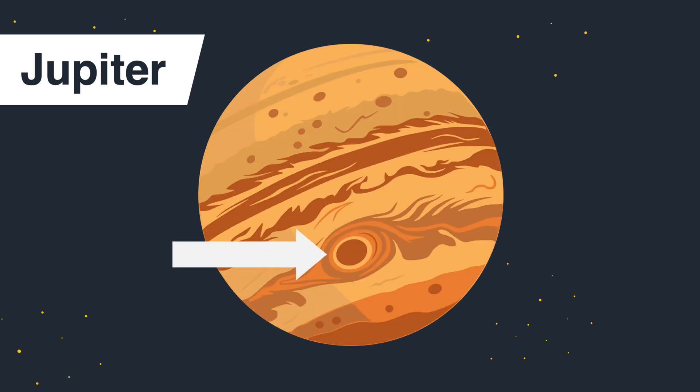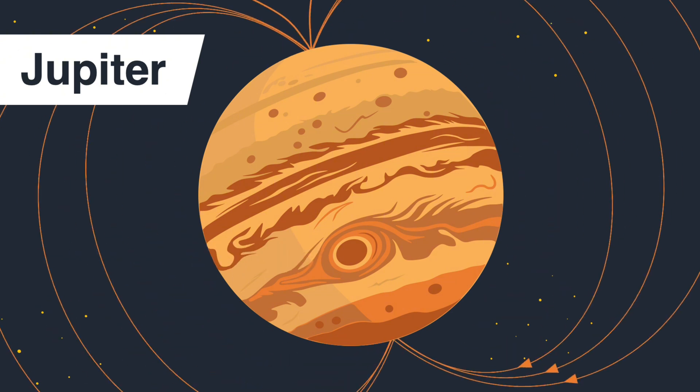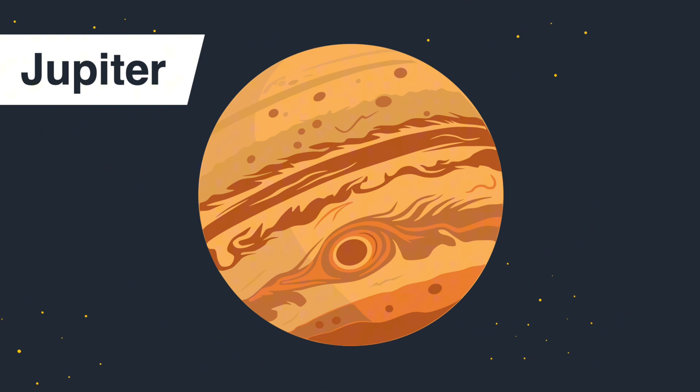Did you know that the Great Red Spot is in fact a storm, larger than Earth, that has raged for centuries? Jupiter also has a strong magnetic field, and there is only one planet in our solar system with even more moons than Jupiter.